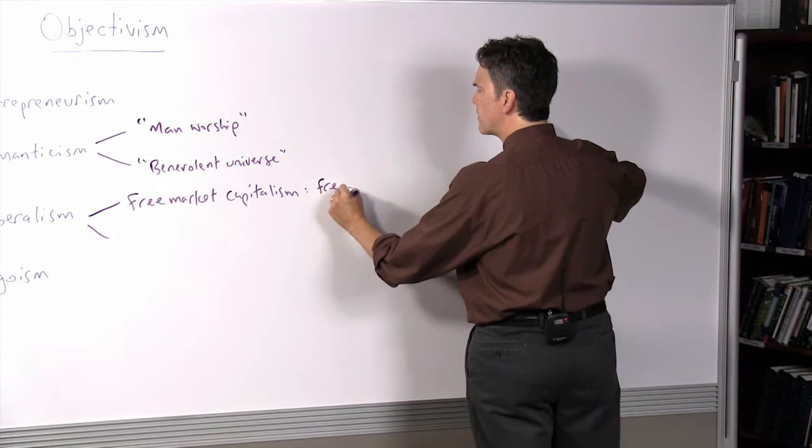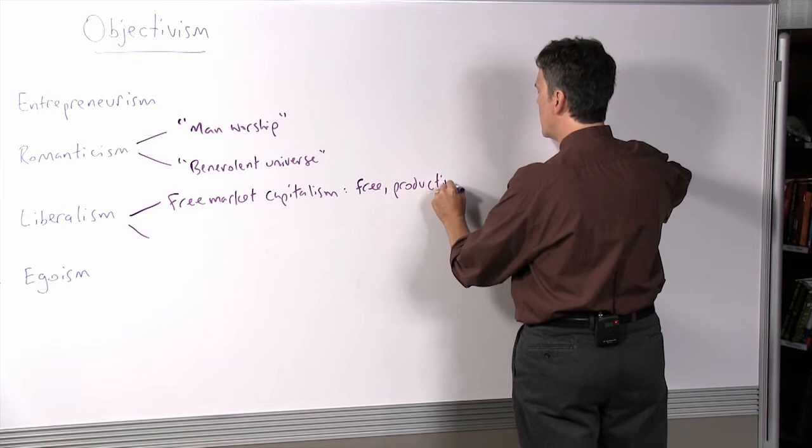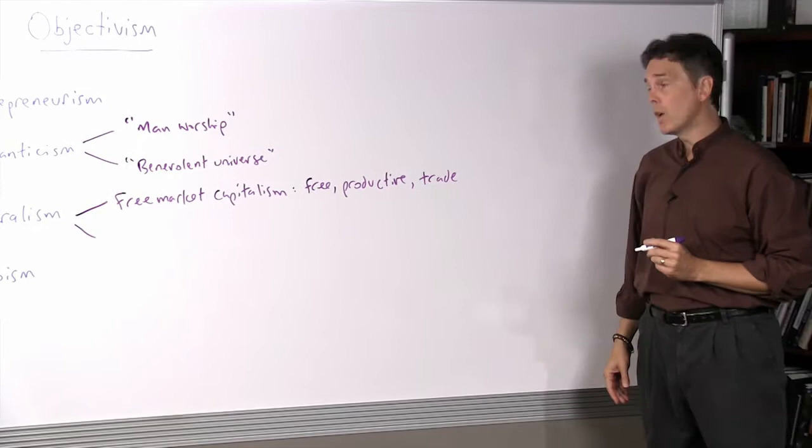So the point here is that what we need is for people to be free in order to be productive creators of value, and that when we deal with other people it should be on the basis of voluntary trade.